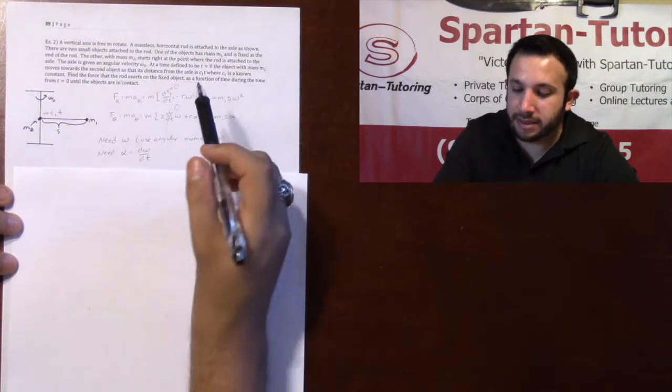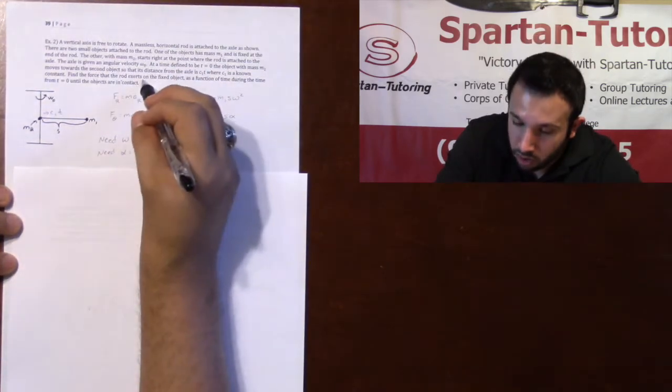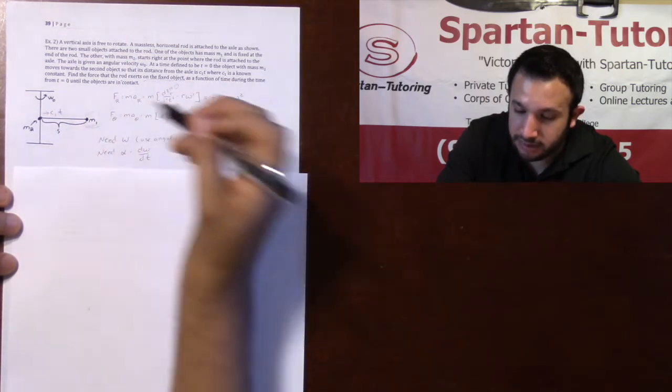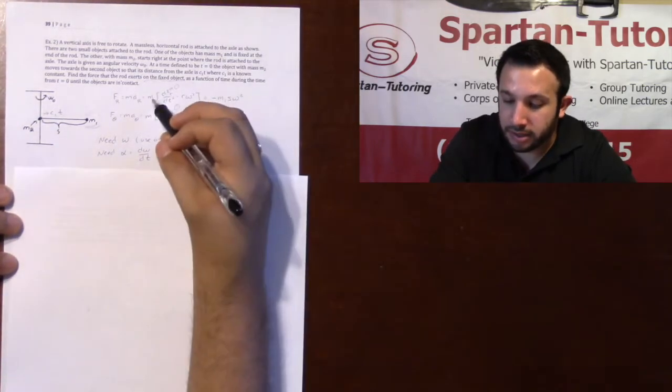Now, in this situation, I want to find the force the rod exerts on the fixed object, on m1. This is my fixed object. Therefore, FR is going to be an m1.